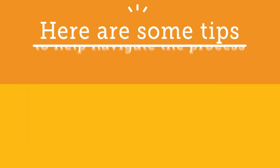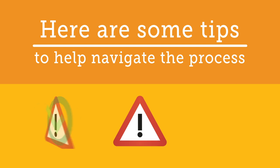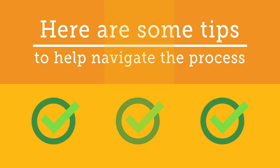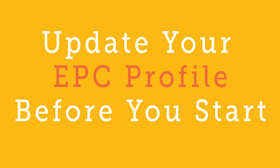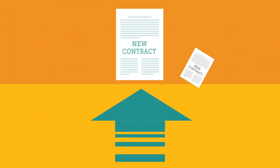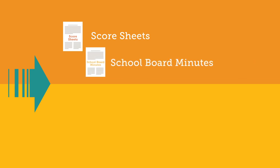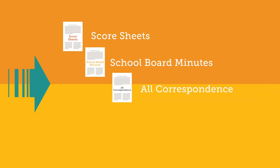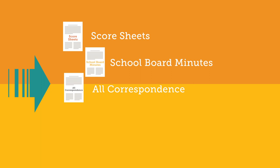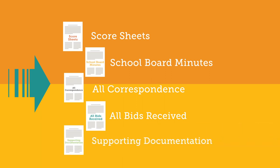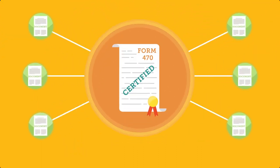If you are ready to file, here are tips to help you successfully navigate the process and avoid common pitfalls. Update your EPIC profile before you start. You will need to upload any new contracts you're applying for and all bid documents, including score sheets, school board minutes and records related to contract approval, all correspondence with service providers, all bids received — winning or losing — and supporting documentation for your discount level into your EPIC profile. Make sure to associate documents with the Form 470 that initiated the relevant bidding process.